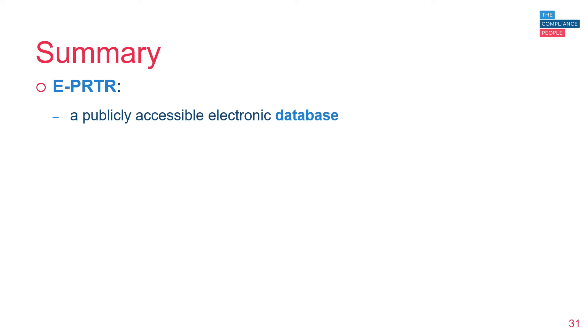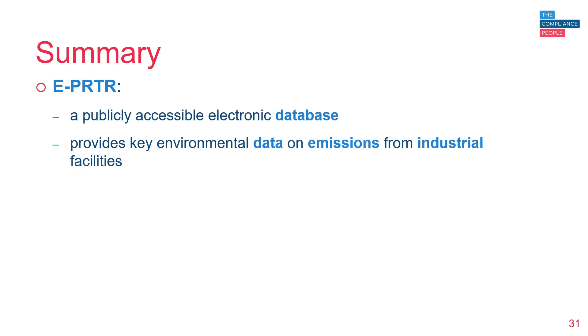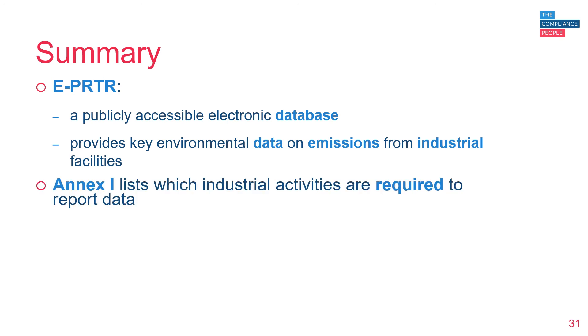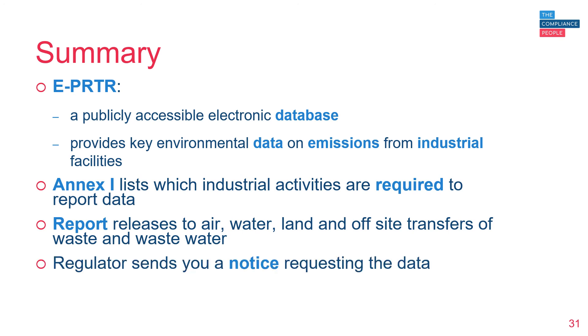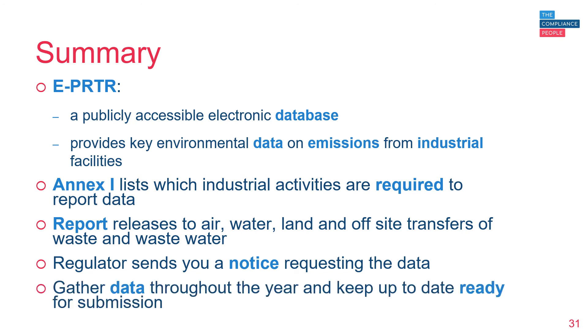To summarise: the European Pollutant Release and Transfer Register is a publicly accessible electronic database which provides key environmental data on emissions from particular industrial facilities. Annex 1 of the EPRTR regulation lists which industrial activities are required to report this data. The data required to be reported is releases to air, water and land, and also offsite transfers of waste and wastewater. The regulator will send you a notice when this data is required and when it's due; however, it's useful to bear in mind that this notice can sometimes be issued late, so it's best to gather the data throughout the year and keep it up to date, ready to submit.